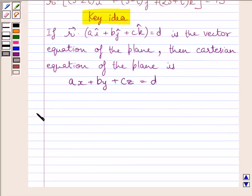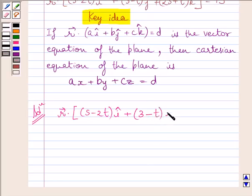Let us now start with the solution. First of all, we will rewrite the given equation of the plane. It is R vector dot S minus 2T I plus 3 minus T J plus 2S plus T K is equal to 15.